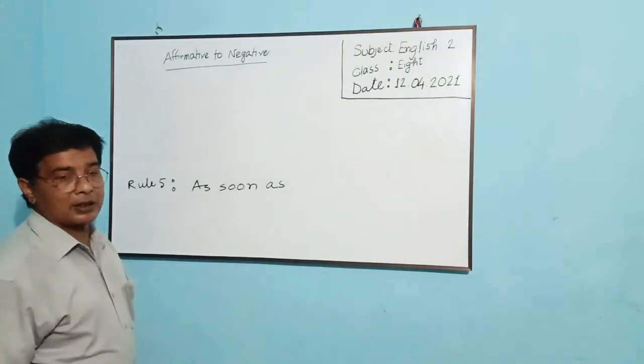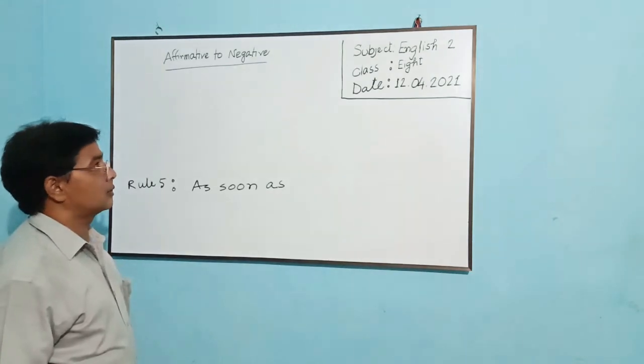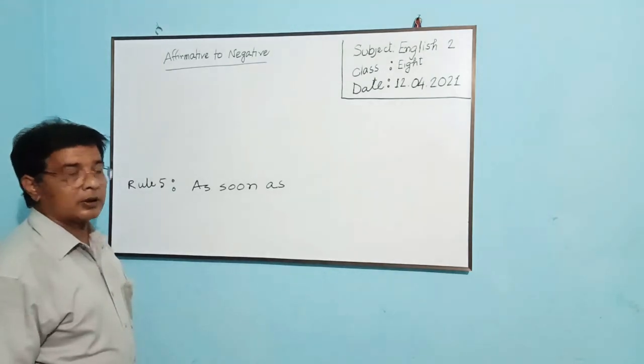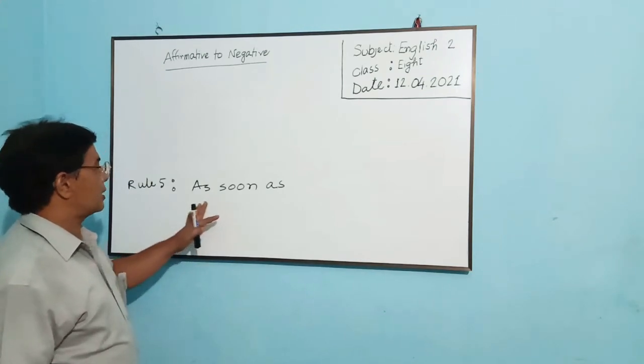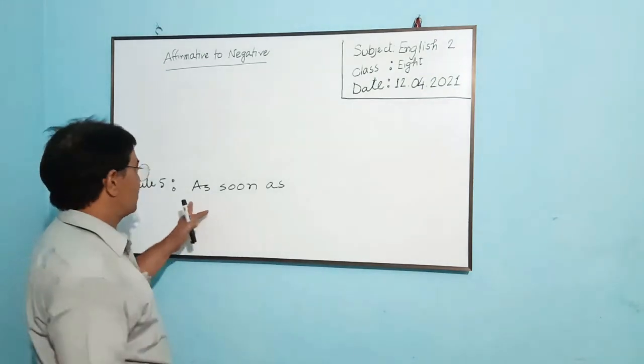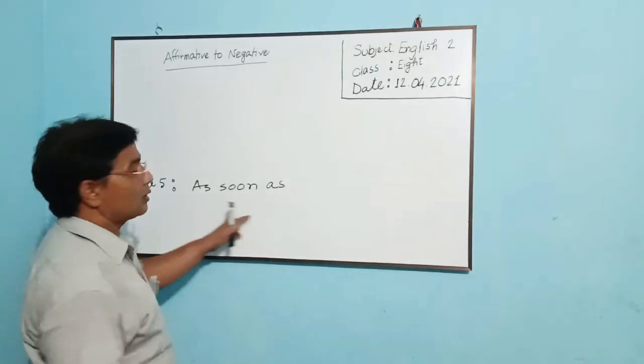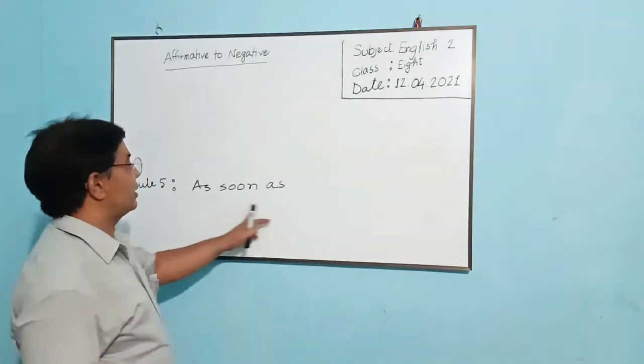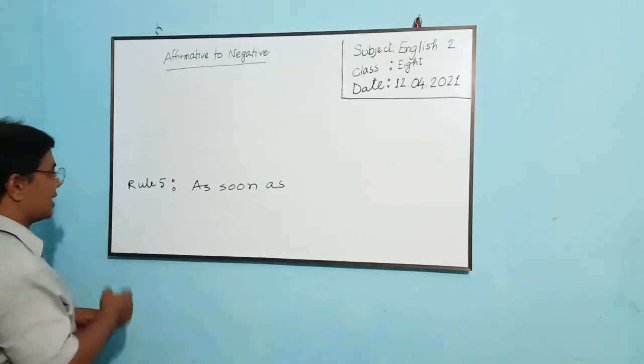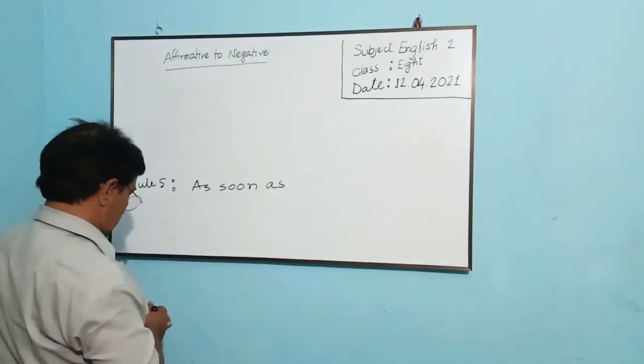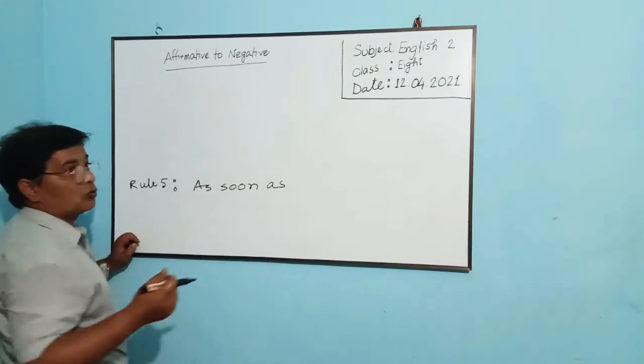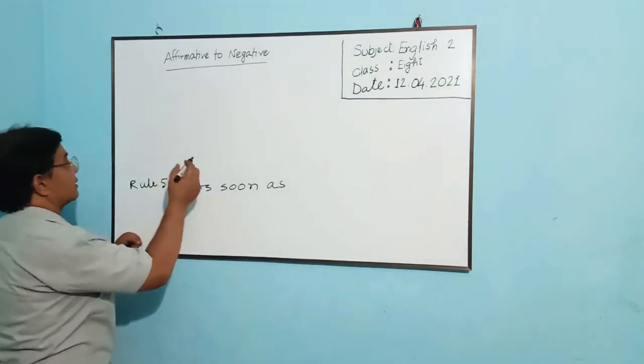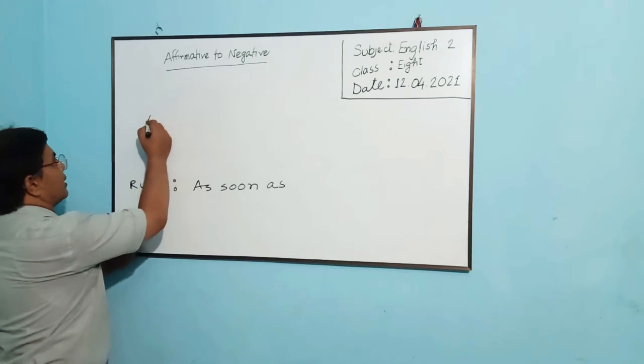As soon as refers to the idea, the work which has been done very immediately. That means you will get two sentences using this conjunction. It is a subordinate conjunction. This as soon as generally contains two sentences having two past situations. Like this, I am giving here an example.